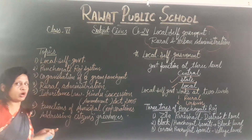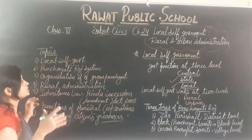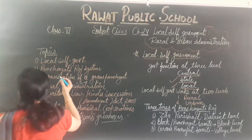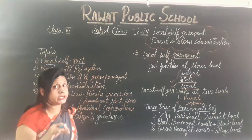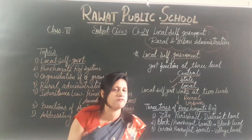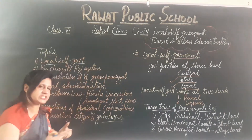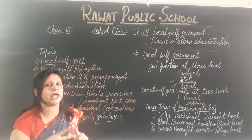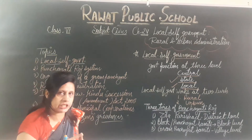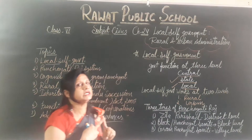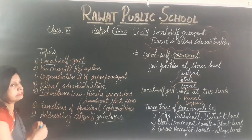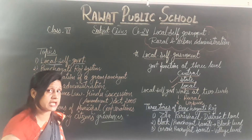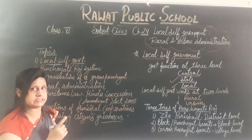What are the topics in your book which we are going to study in this chapter? First, we will explain what is the local self-government — what is the meaning of local self-government. Local self-government is divided into two parts: rural and urban. Rural means villages and urban means cities. So this local self-government works in both rural areas as well as in urban areas.